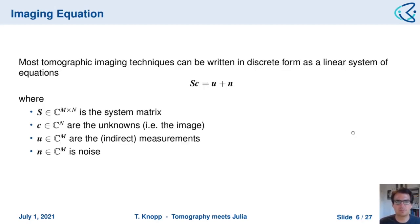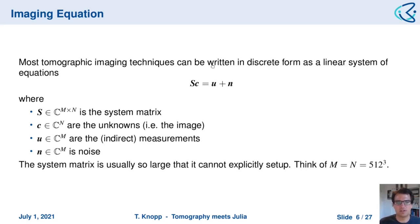Fortunately, from a mathematical point of view, all these methods can be written in a similar form as a linear system of equations: S times C equals U, where S is the system matrix describing the physics, C is the unknown underlying image (which can be 2D, 3D, or 4D for time-resolved imaging), U are the measurements from the outside, and N is the noise. Importantly, the system matrix S is usually so large that we cannot explicitly store it in main memory — think of M equals N equal to 512 to the power of 3.